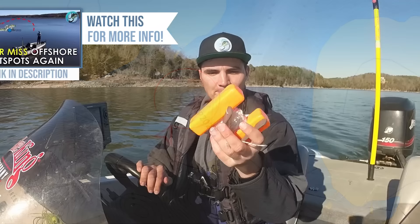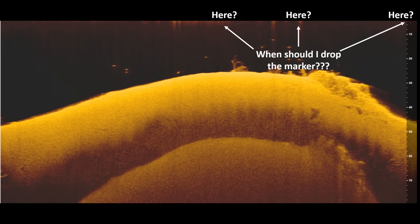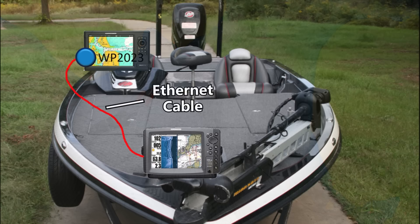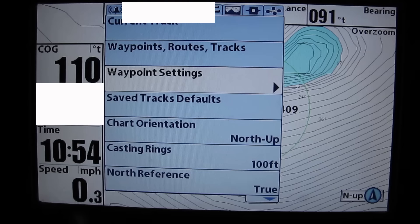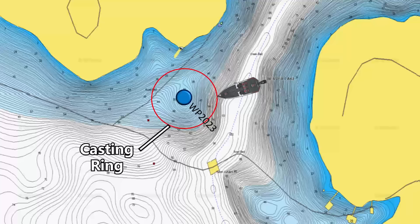Fortunately, almost every fish finder has a handy function that lets you use the directional pad to cursor over to a specific spot and drop a waypoint. This drops a waypoint directly on top of that spot in the down imaging image and overlays it on your map — letting you figure out exactly where an object is. I've made a video explaining exactly how to graph over an object, mark it with a waypoint, turn the boat around, and cast on it accurately every time.